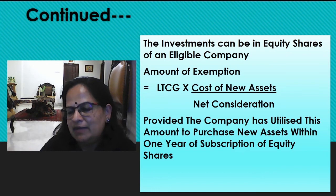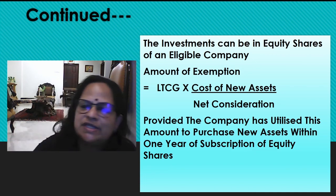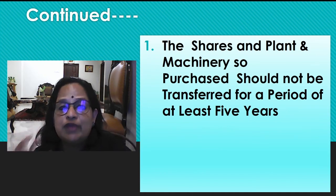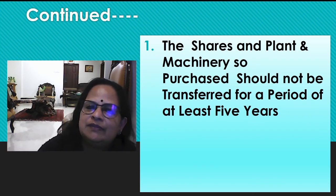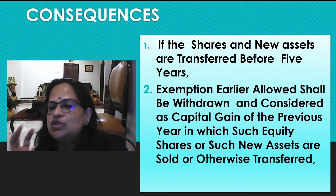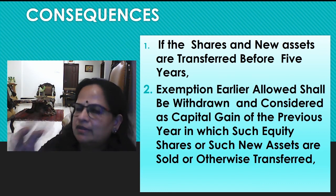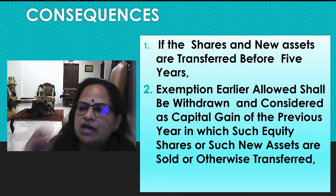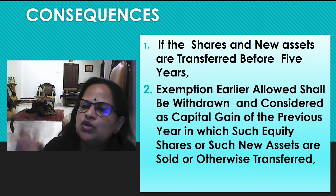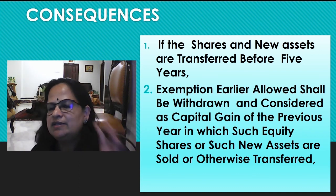Amount of exemption is calculated as: long-term capital gain multiplied by cost of new asset divided by net consideration. Net consideration is sale consideration minus expenses on sale. The company must have utilized this amount to purchase new assets within one year of subscription of equity shares. After receiving equity from the SSC, the company uses the money for buying new assets. The shares and plant and machinery so purchased should not be transferred for a period of at least 5 years — the lock-in period here is 5 years, unlike all other sections where it is 3 years. If the shares and new assets are transferred before 5 years, exemption earlier allowed shall be withdrawn.